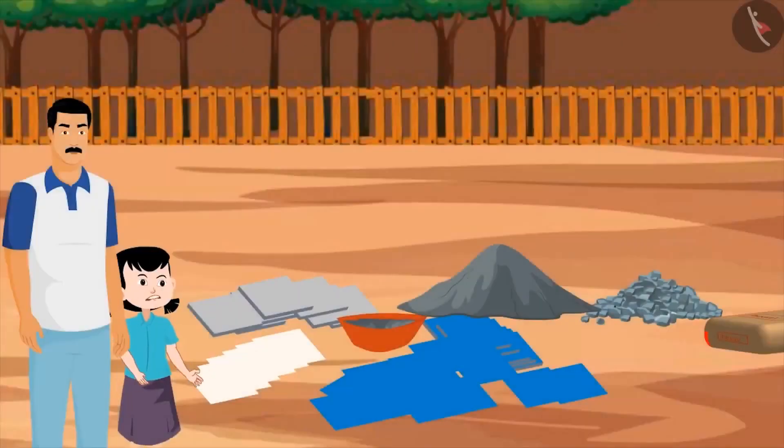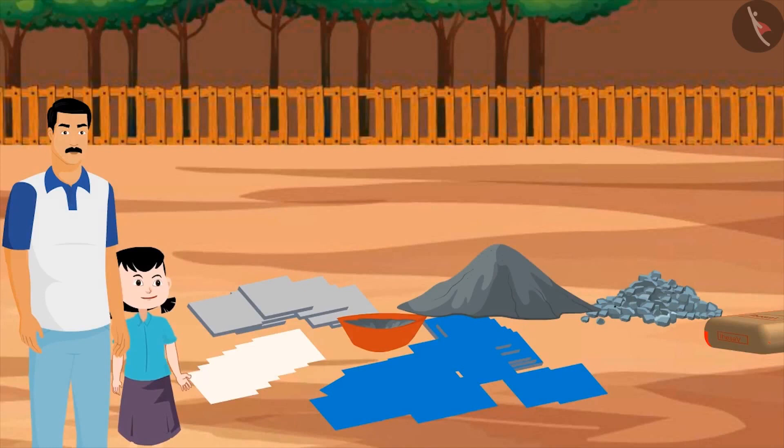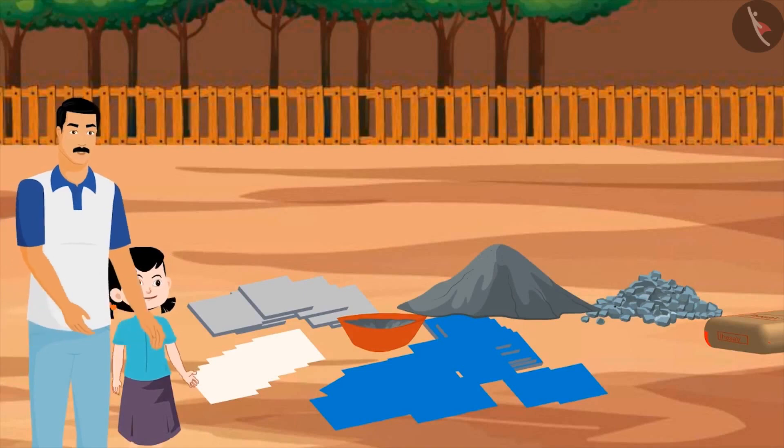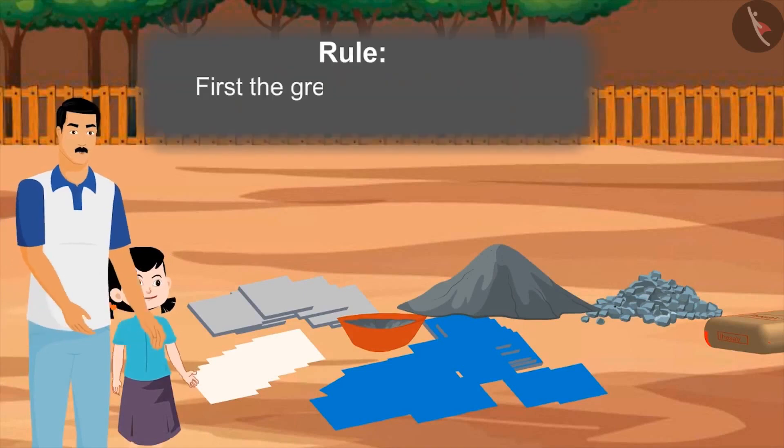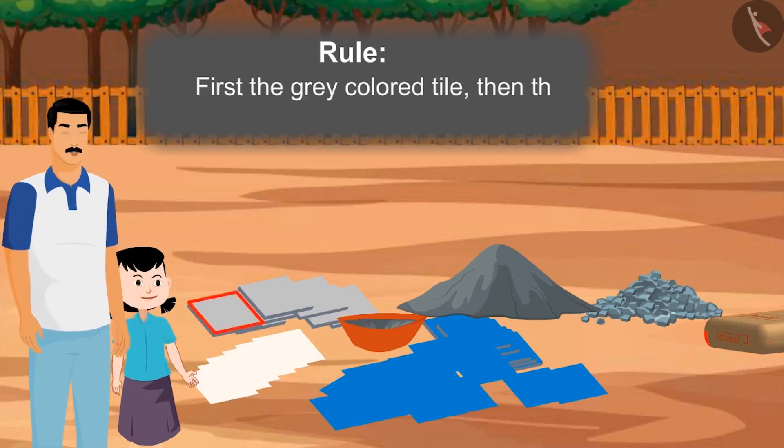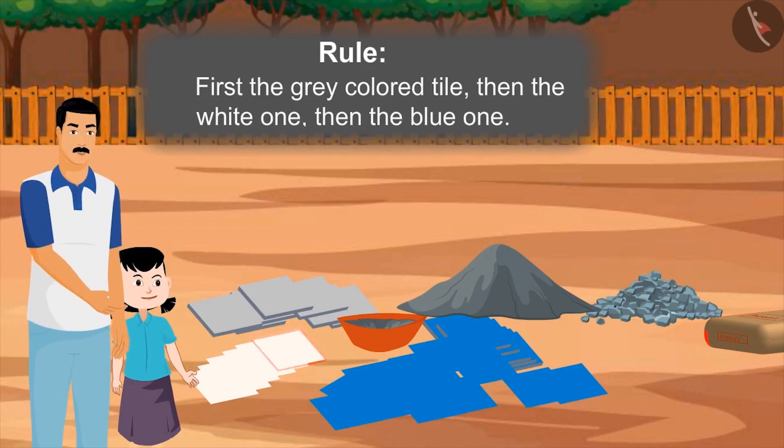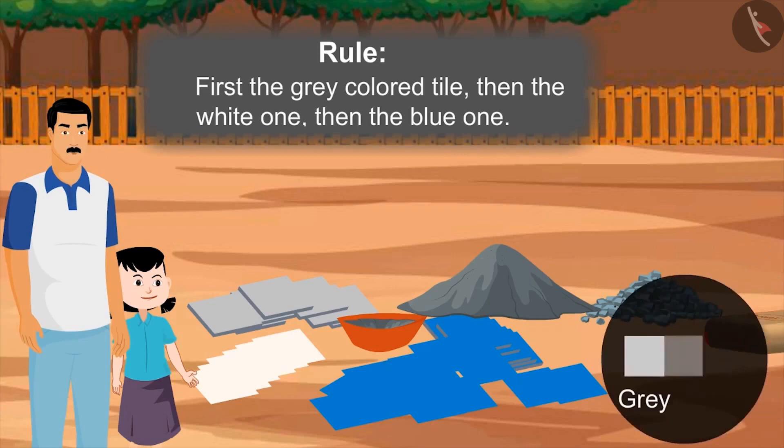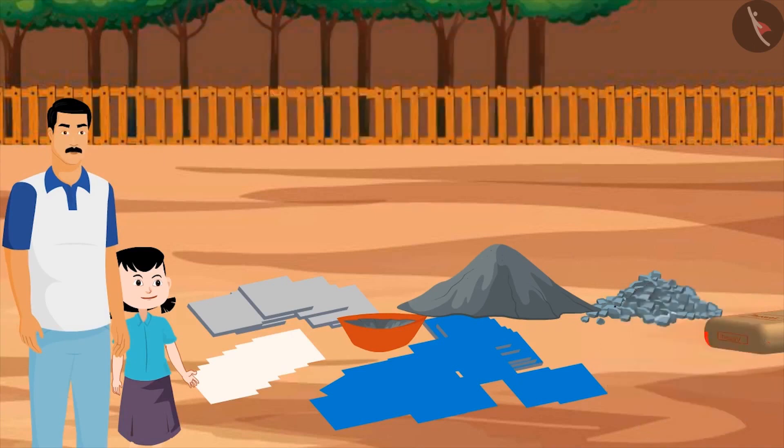Uncle, did the tiles come? Yes, look. Can I help you in putting tiles? Yes, sure. First, we will put the grey coloured tiles. After that, we will place the white one. And after that, the blue one. Make sure to put the tiles in this order only so that all of them make a beautiful pattern. Okay, uncle.